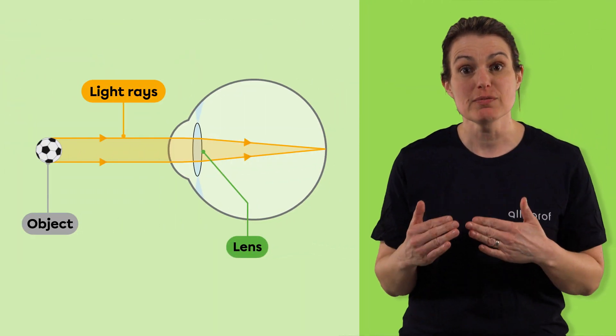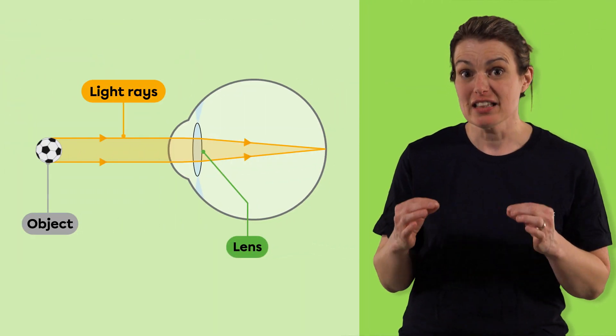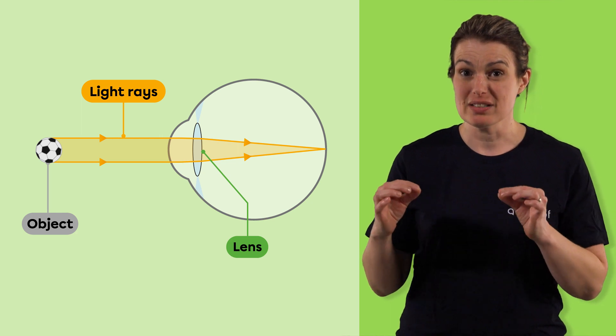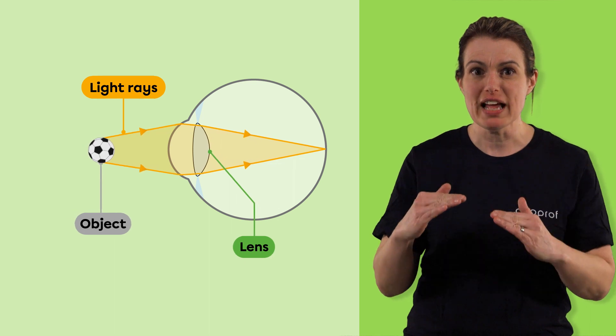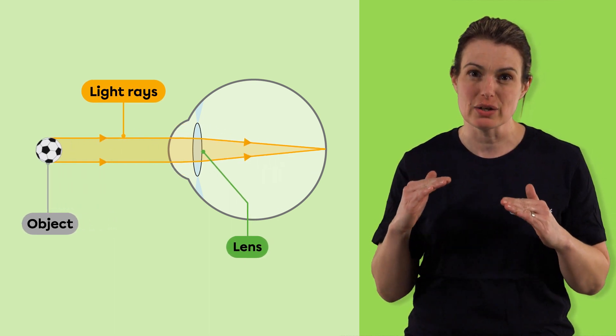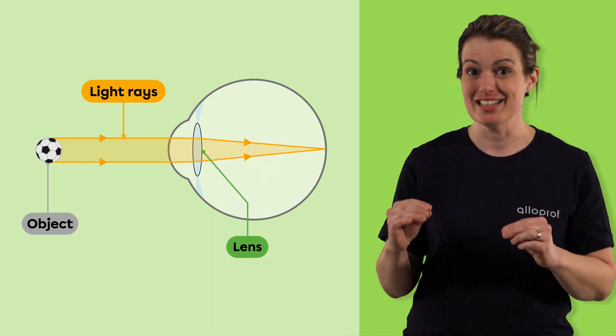For the image perceived by the brain to be in focus, the light rays must converge at the right place on the retina. To achieve this, the lens can bulge or flatten to direct the rays to the desired location. This is called lens accommodation.